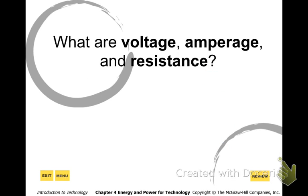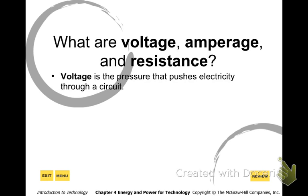So we measure electricity with volts, amps, and resistance. Volts — sometimes the letter is E, sometimes it's V; you'll see it both ways. I have a video I want you to watch after this that will explain Ohm's law a little better. Voltage is the pressure that pushes electricity into the circuit. Your batteries for your Morse code machine are 1.5 volts — that's how much pressure of electricity is going to go through that circuit.